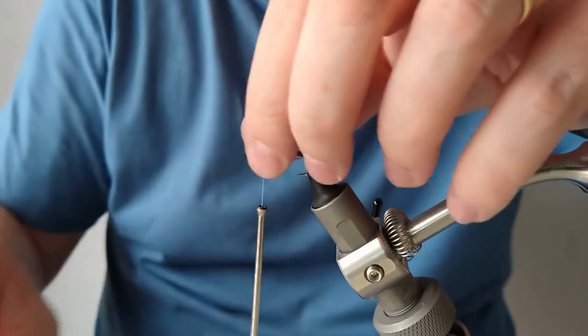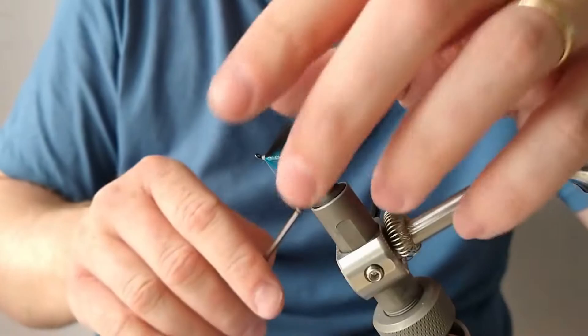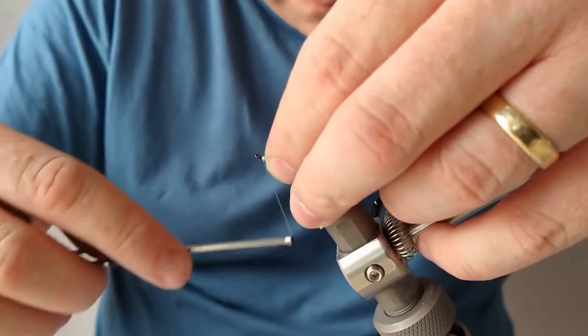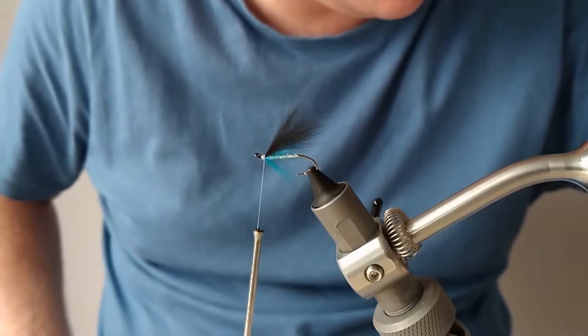Cut off the excess. And then I am going to use a wee bit of superglue just for a bit of security to help hold down the wing.